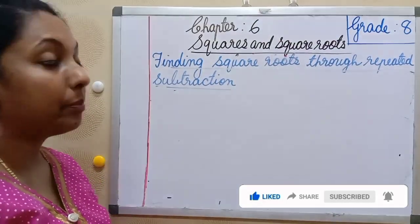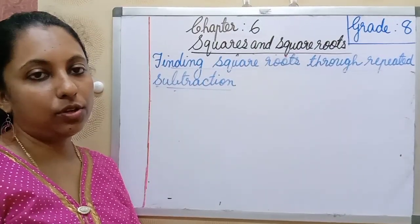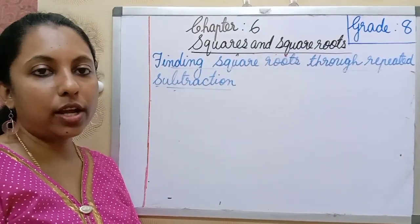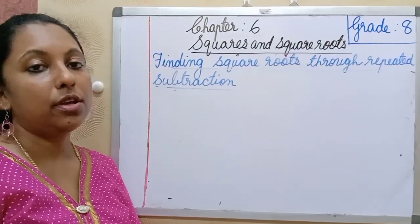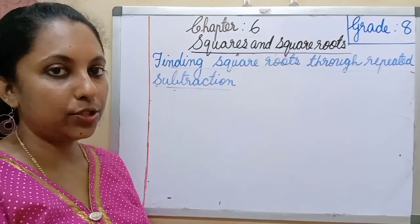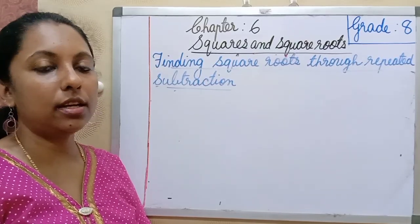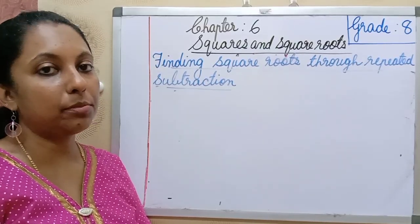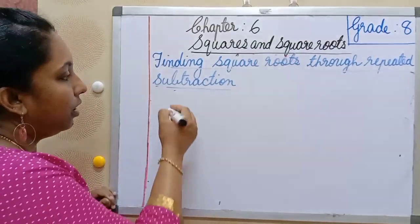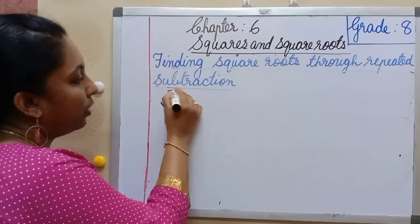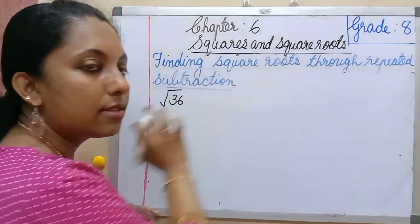Next topic: finding square roots through repeated subtraction. As you all know, every square number can be expressed as the sum of successive odd natural numbers starting from 1. The sum of the first n odd natural numbers is n squared. Now let's find the square root of 36 using this method.